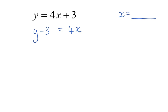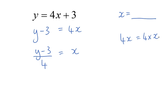Now I still want to get the x by itself, so I want to move the 4. So I can do y take 3 divided by 4 is equal to x. The reason why I did divide by 4 is because on this side the 4x is the same as 4 times x, so the opposite of times is divide.